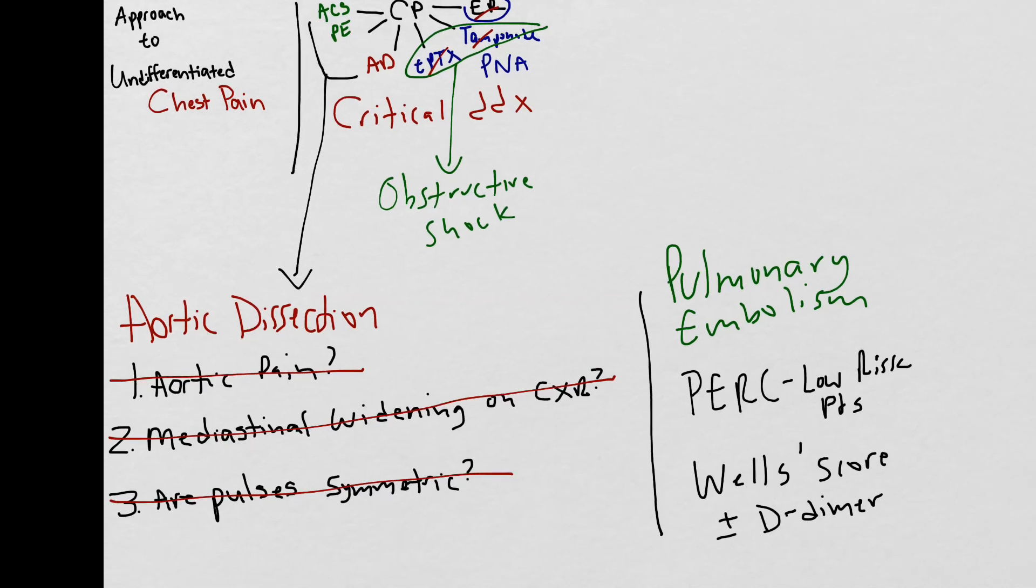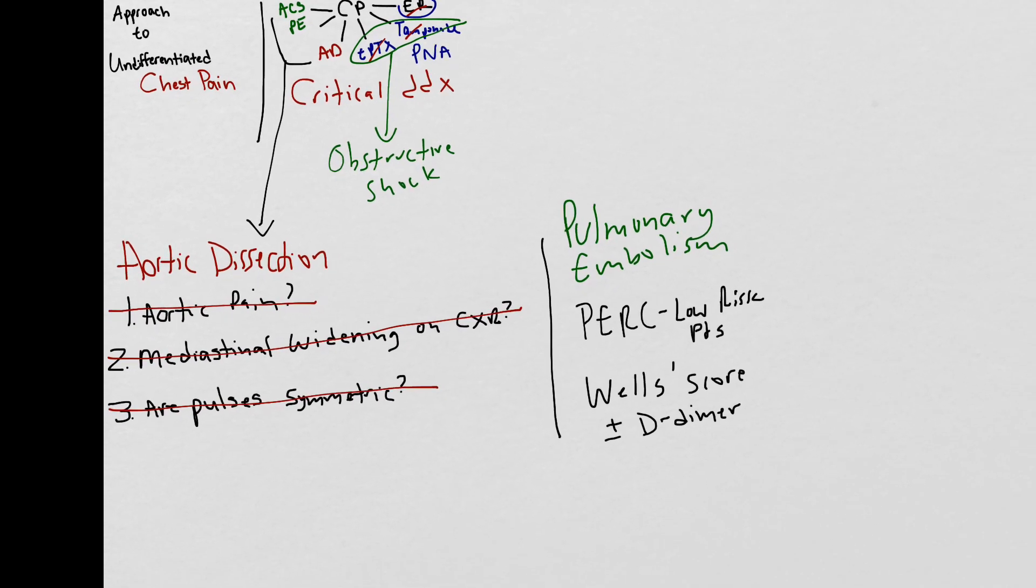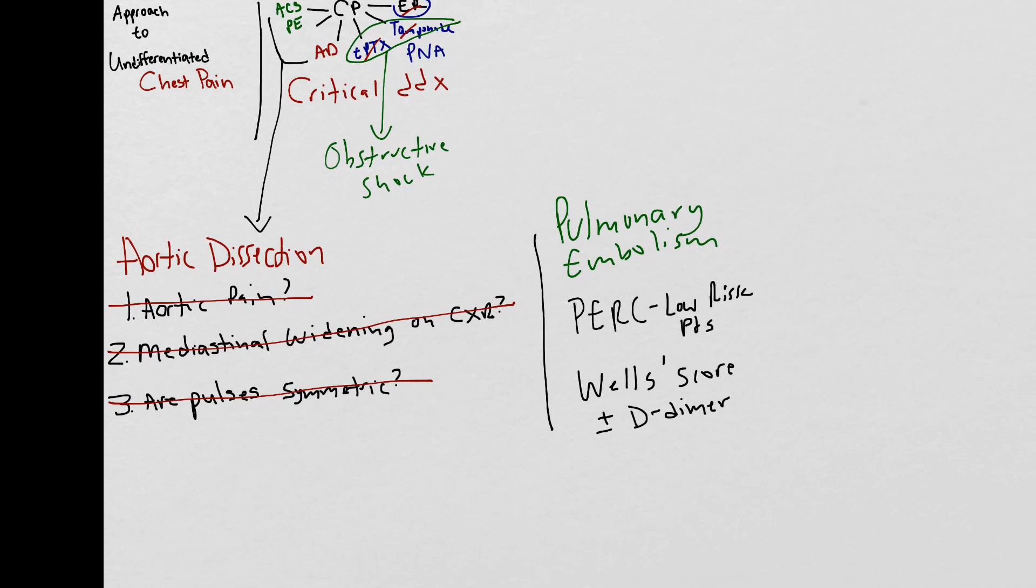Now that you've ruled out all but one of the disease processes in your differential, you want to take a step back and pause. Ask yourself one question: Is there anything else going on? This is where you go back to your patient's room and see if there's anything you may have missed.